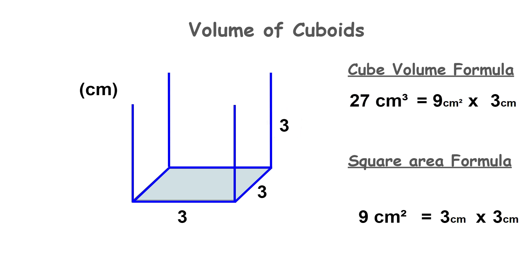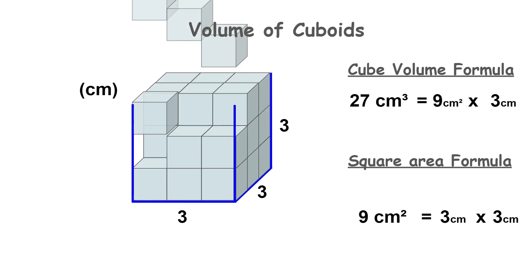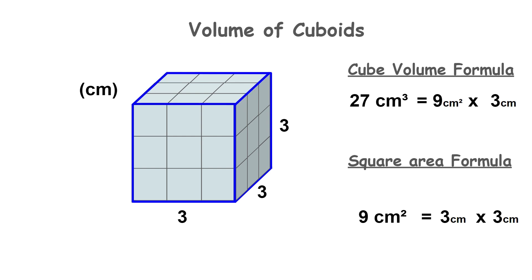Nine centimeters squared multiplied by three centimeters gives us the volume of 27 centimeters cubed. This means our cube is made up of 27 smaller cubes which each have a volume of one centimeter cubed. The number of cubic centimeters that can occupy this cube is equal to 27, which is why our answer is 27 centimeters cubed.